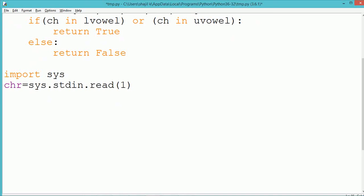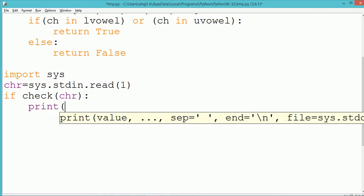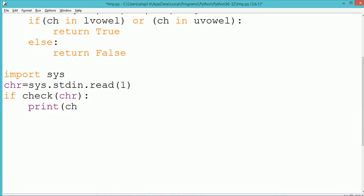The same read method can be used for reading multiple characters. So suppose if you write read of two it will read two characters from the standard input and get stored into the chr variable. Now in this case of program we need to read only one character from the user. That's why we have written the parameter of read as one.